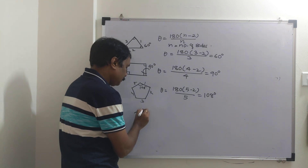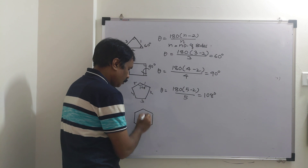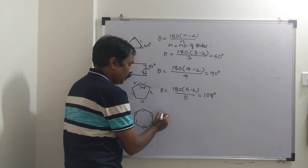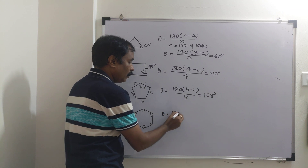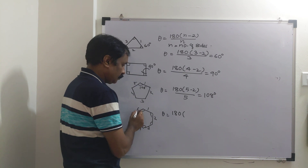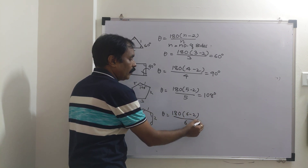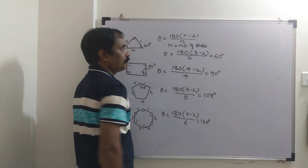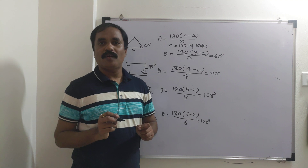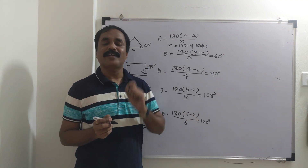For cyclohexane, with 6 sides, theta equals 180 times (6 minus 2) divided by 6, giving a bond angle of 120 degrees. The regular tetrahedral bond angle is 109.5 degrees, so any deviation from that is called angle strain.